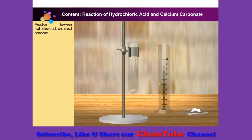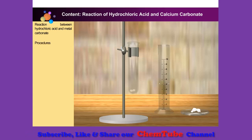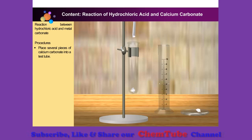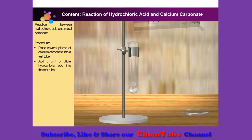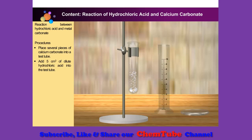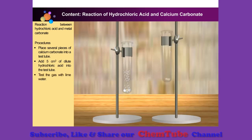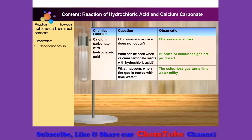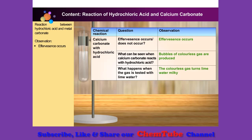Let's find out what happens when hydrochloric acid reacts with calcium carbonate. Place a few pieces of calcium carbonate into a test tube, then add 5 cubic centimetres of dilute hydrochloric acid. Observe what happens. We can see that effervescence occurs once hydrochloric acid is added, and bubbles of colourless gas are produced.